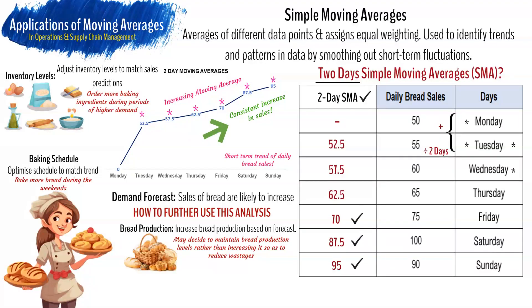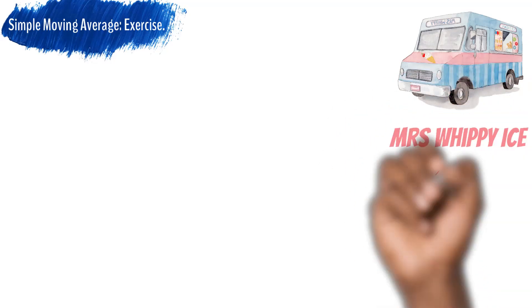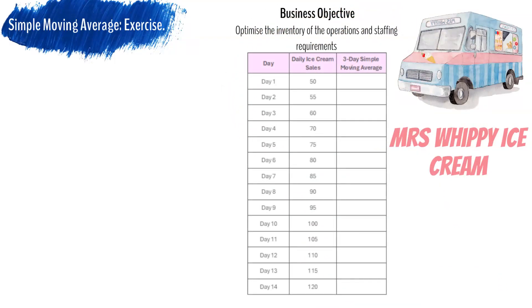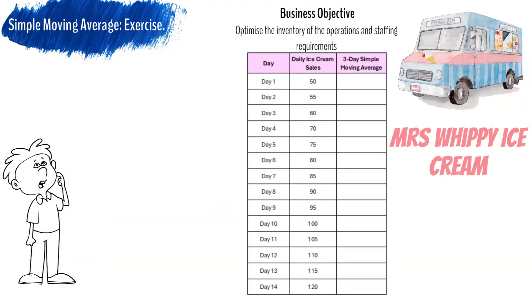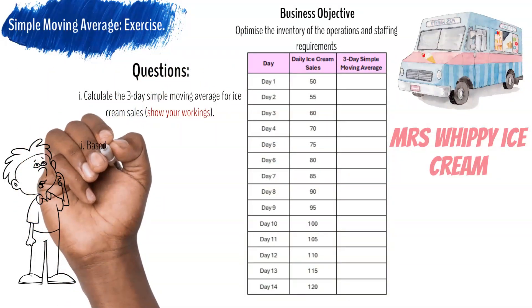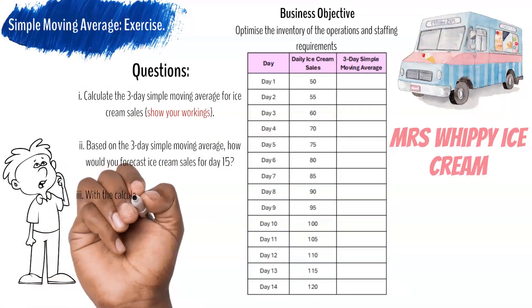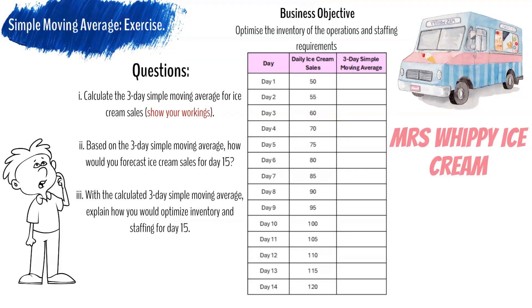Now it is your turn to have a go at using simple moving averages. Imagine that you own an ice cream shop by the beach and you want to optimize your inventory and staffing. You have gathered sales data for the past two weeks as presented in the table. Calculate the three-day simple moving average for each day starting from day three, showing your calculations. Based on the three-day simple moving average trend, what is the forecasted daily ice cream sales for day 15? And how can you use this forecast to optimize your ice cream inventory and staffing for day 15?